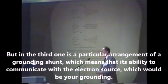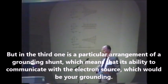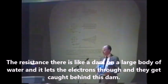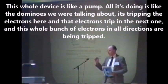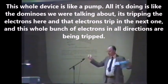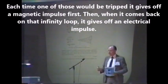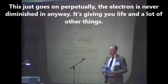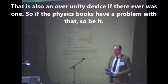The third one is a particular arrangement of the grounding shunt, which means its ability to communicate with the electron source — your grounding. The resistance there is like a dam on a large body of water, letting electrons through but catching them behind the dam. This whole device is like a pump. Like the dominoes we were talking about, it trips electrons one after another in all directions. Each time one is tripped, it gives off a magnetic impulse first, then on the return of that infinity loop, it gives off an electrical impulse. This just goes on perpetually — the electron is never diminished in any way. It's giving you light and much more, and that is also an over-unity device.